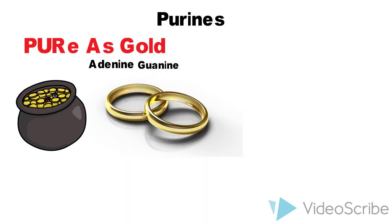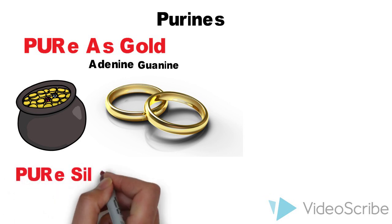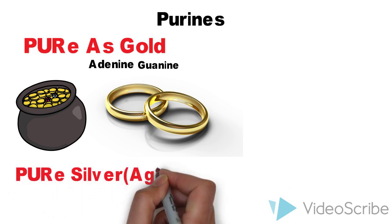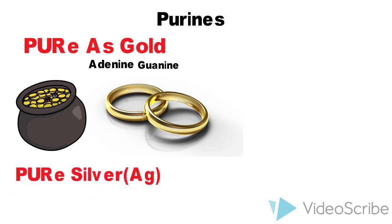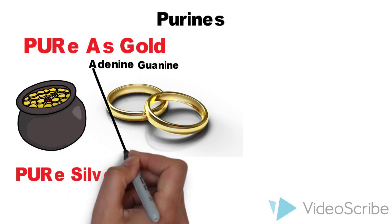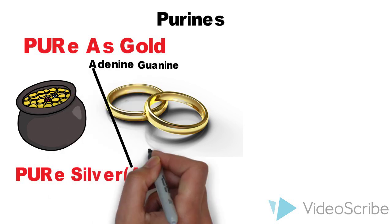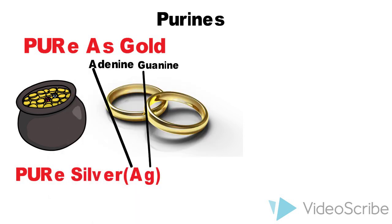The second mnemonic is 'pure as silver,' and the chemical formula of silver is Ag. Again, 'pur' in pure refers to purines, and A and G stand for adenine and guanine.